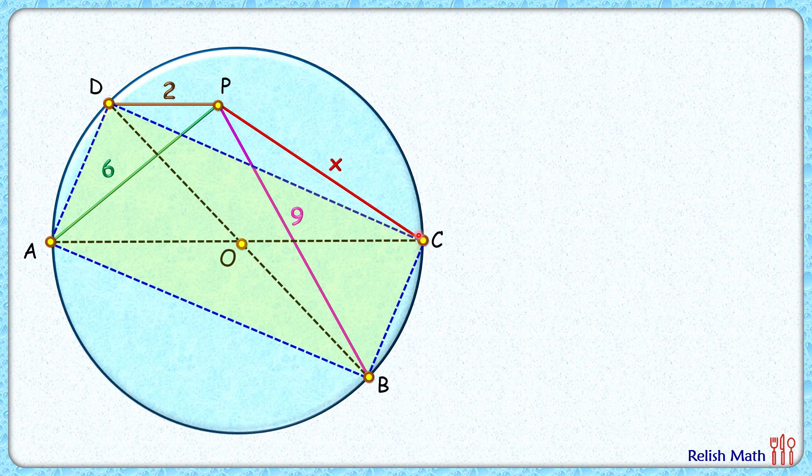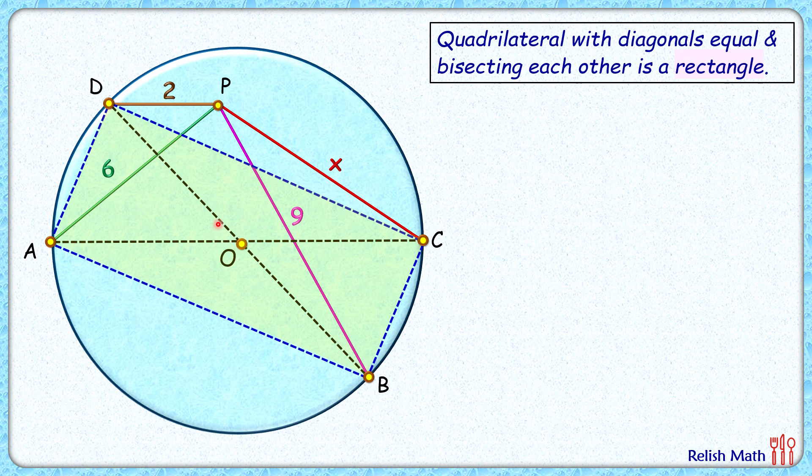The diagonals are also diameters, so the diagonals are equal in length. Also, for this quadrilateral, diagonals bisect each other. We know that any quadrilateral in which diagonals are equal and bisect each other is a rectangle. So we can say that ABCD is a rectangle. Now we don't need this circle anymore.